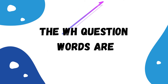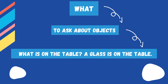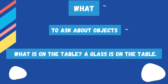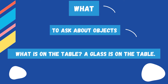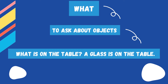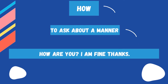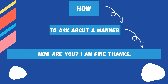The WH question words are: What — to ask about objects. Example: 'What is on the table?' — 'A glass is on the table.' How — to ask about manner. Example: 'How are you?' — 'I'm fine, thanks.'